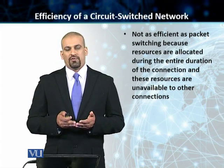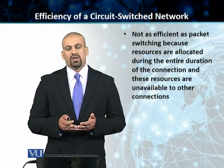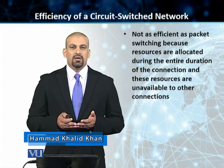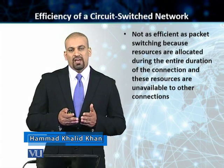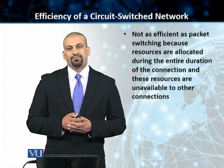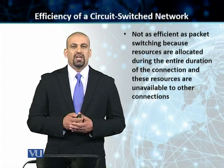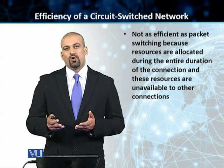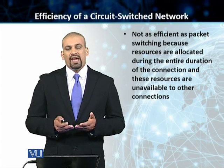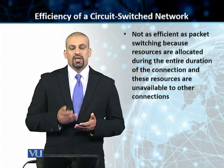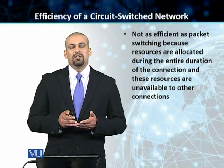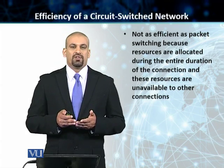The crux of efficiency in a circuit switch network is that the connection — essentially a link with multiple channels — is set up and remains there for the duration of the data transfer prior to data actually being transferred. So when machine A wants to send something to machine B, a dedicated link is set up between A and B, and that link stays there for the duration of the data transfer. Because of this, the efficiency suffers a little bit.